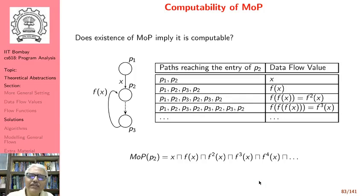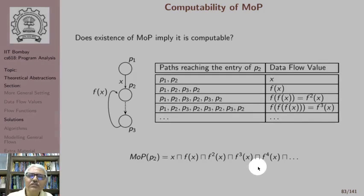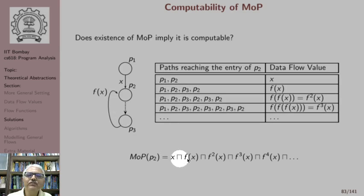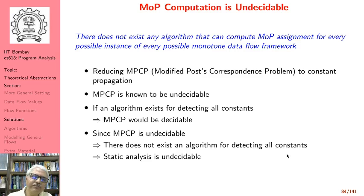Even if MOP exists, it need not be computable, because we might have to traverse an infinite number of paths. One path is P1, P2; another is P1, P2, P3, P2 — going over the loop once, then again. We might have to traverse an infinite number of paths, so the computation may not terminate, and in general MOP is uncomputable.